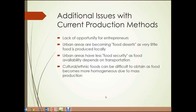Urban areas also have less food security, as food availability depends on the transportation system. Disrupt the transportation system and food stops coming in. In an average urban grocery store, there's enough food to feed the population that depends on that store for only a few days, and those stores are constantly re-supplied. Finally, cultural and ethnic foods can be difficult to obtain as food becomes more homogenous due to mass production.